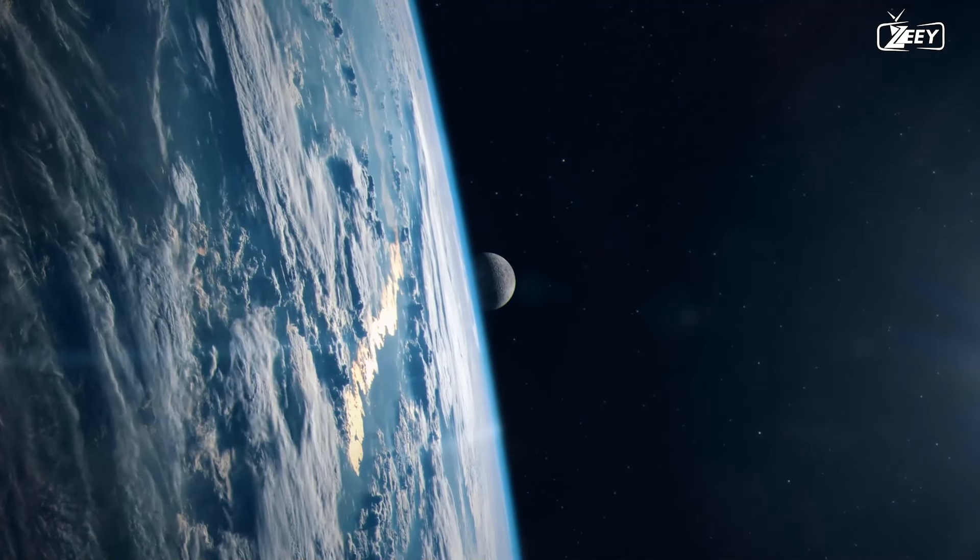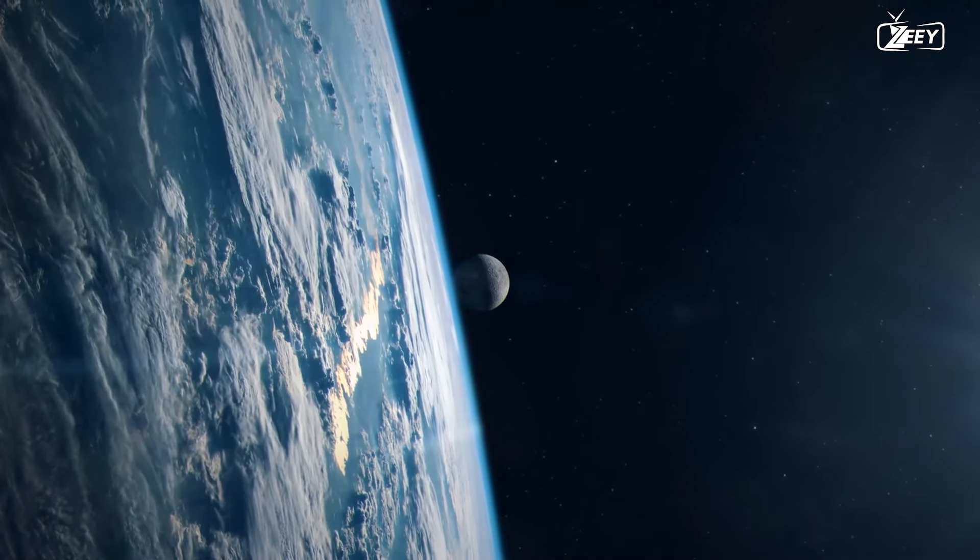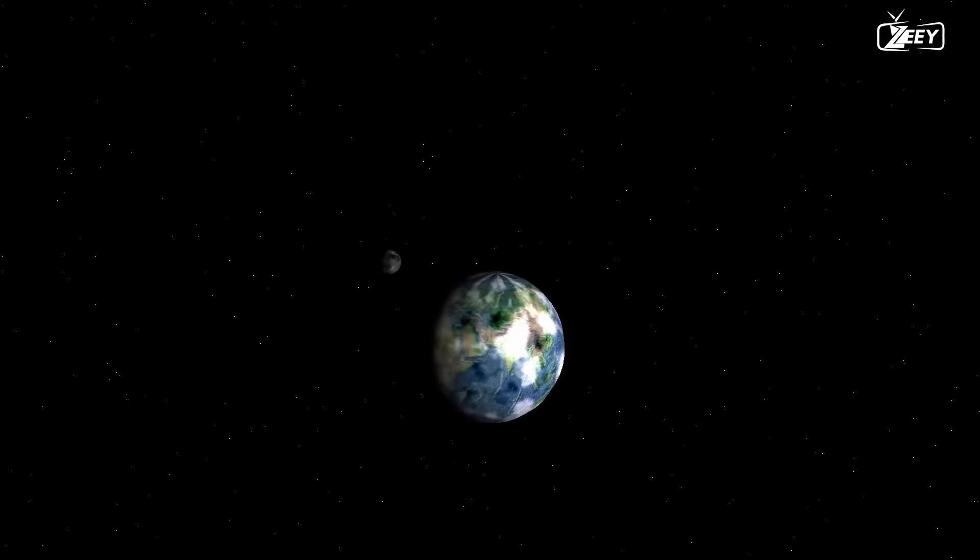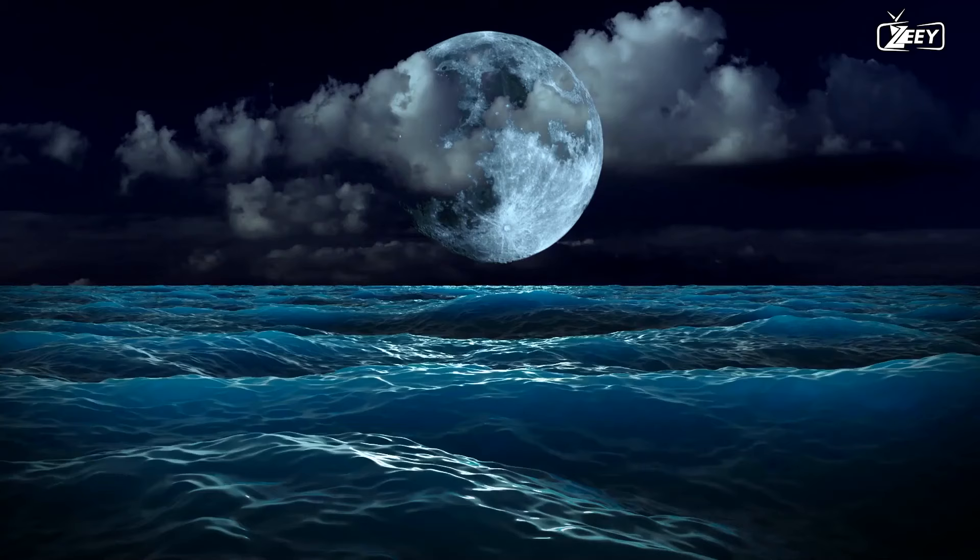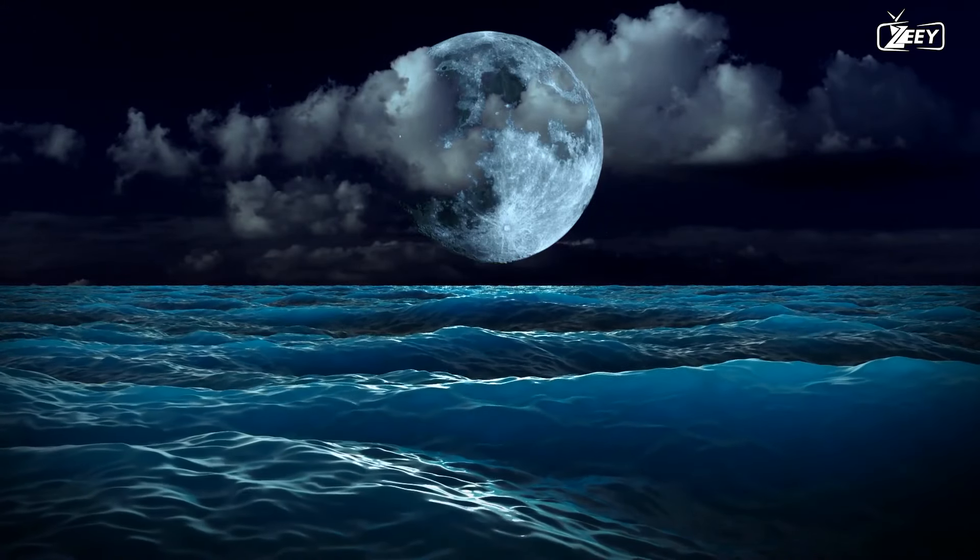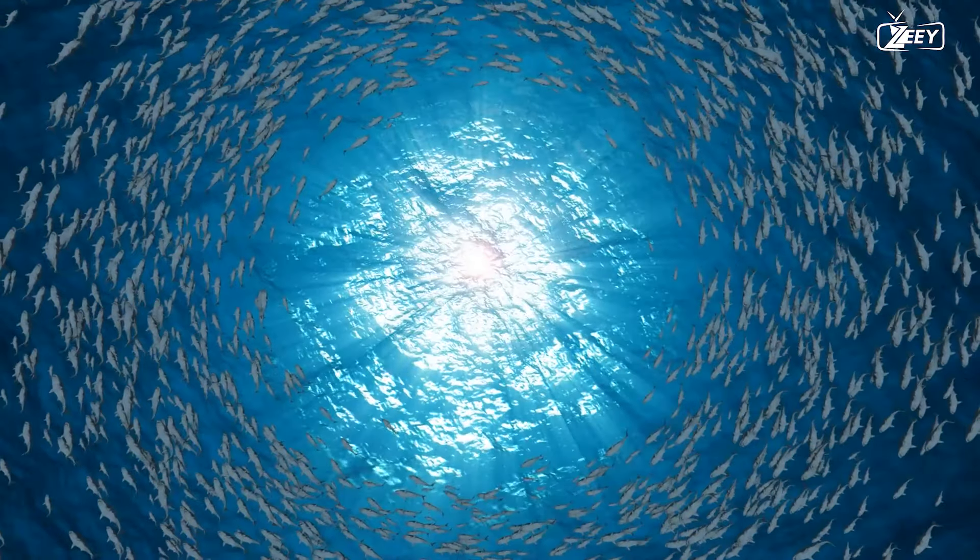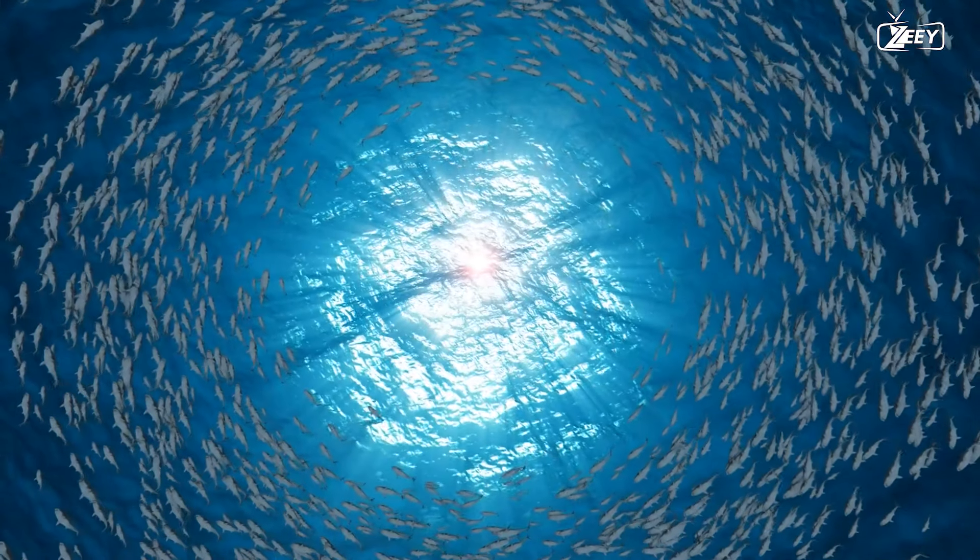The big Moon is another crucial feature that has contributed to Earth's ability to maintain life. The moon's gravitational pull aids in the stabilization of Earth's rotation, which aids in the stabilization of the planet's climate. Furthermore, the moon's gravitational pull produces tides, which have aided in the evolution of life on Earth by providing a varied range of habitats for marine species.